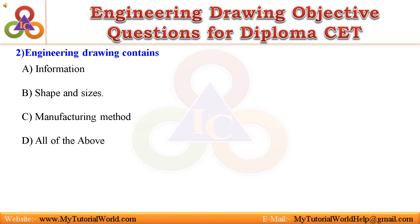Question 2: Engineering drawing contains — A. Information, B. Shape and sizes, C. Manufacturing method, D. All of the above. Answer is All of the above.